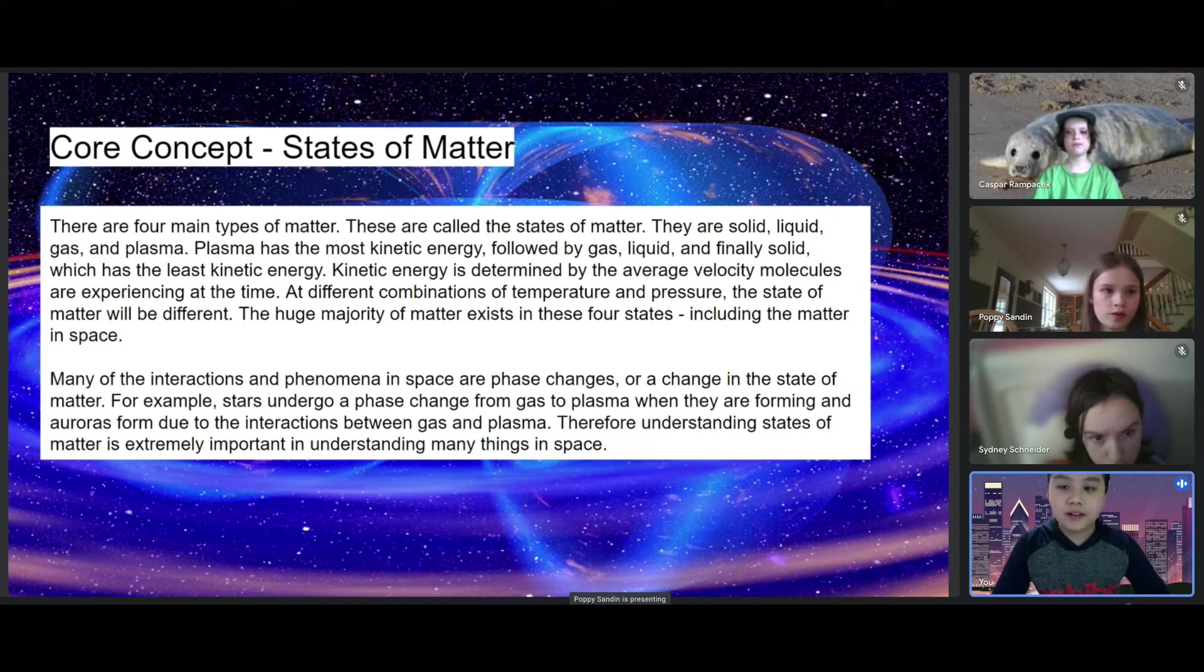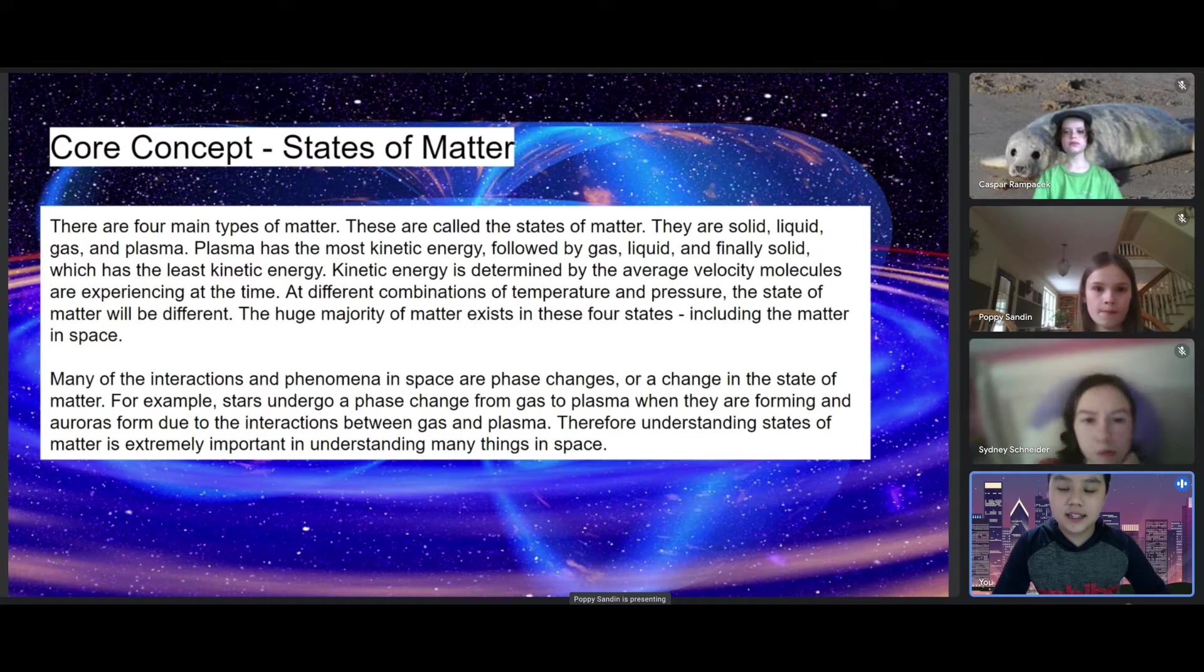There are four main types of matter called the states of matter: solid, liquid, gas, and plasma. Plasma has the most kinetic energy, followed by gas, liquid, and finally solid, which has the least kinetic energy.